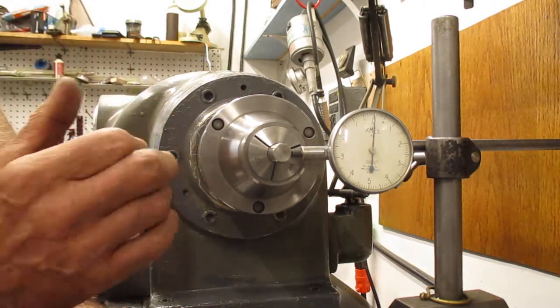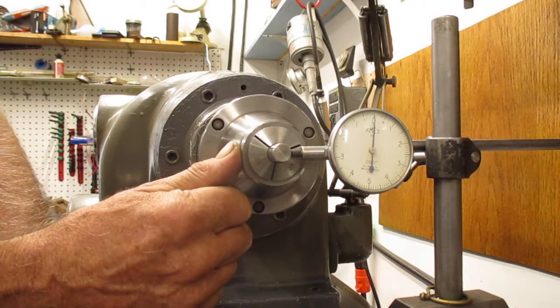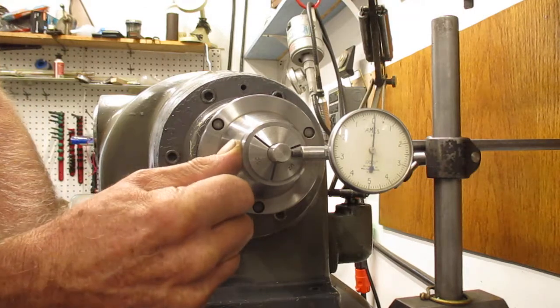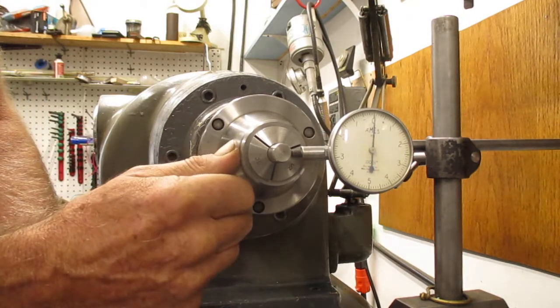I'm going to put my thumb, this is a 5C collet chuck here, and I'm going to put my thumb right here. Now watch that indicator. See that?